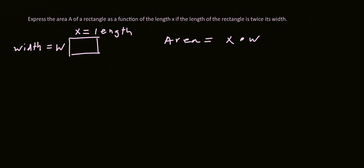Well, let's think about it. So if the length is, let's say if the length is two, then what will be the width? It will just be one because the length is twice its width. So it's twice of that.